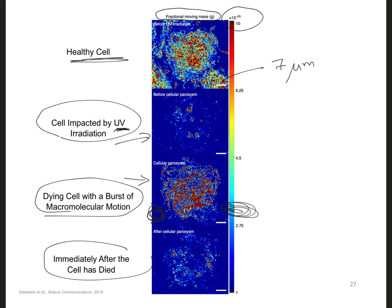And the fourth image at the bottom shows the reduced macromolecular motion immediately after the cell has died. So they're using PWS to understand the behavior and what's going on inside cells while they're stressed and as they're dying.